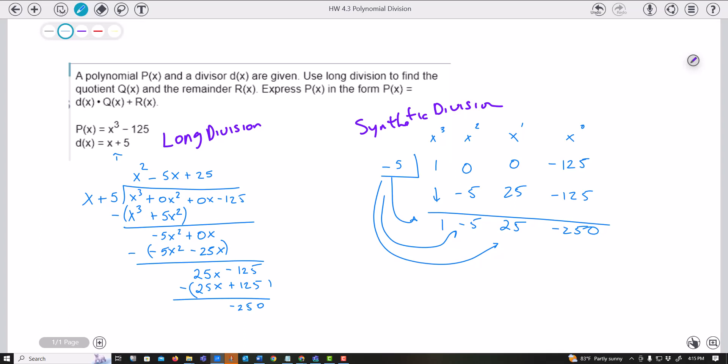And I get negative 250. Remember how you write your answer is 1 power less. So that would be 1x squared minus, we're just going down the powers now, 5x plus 25. Does that look familiar?